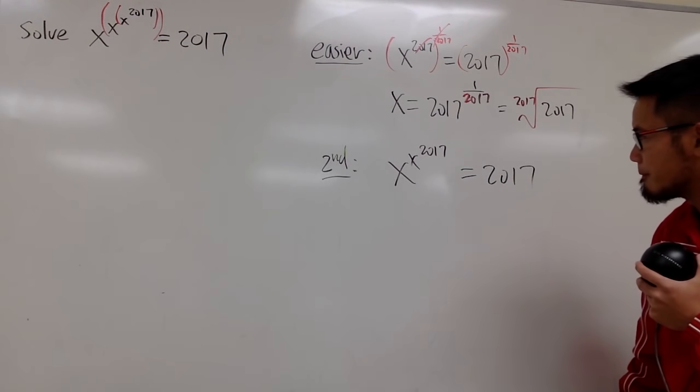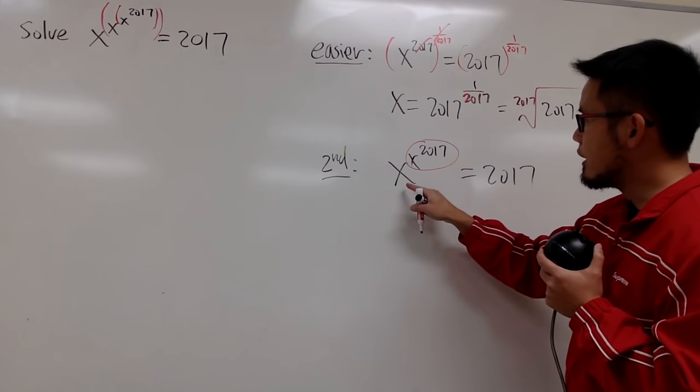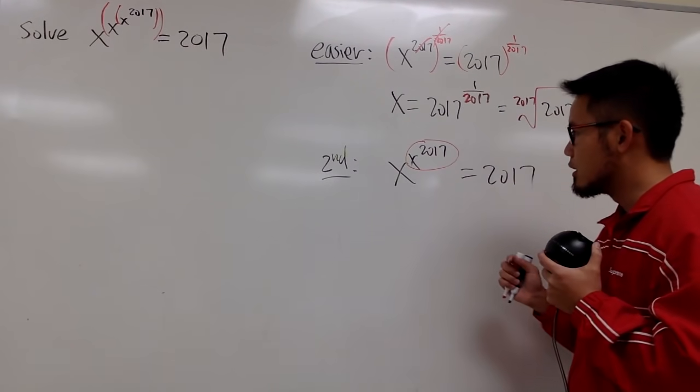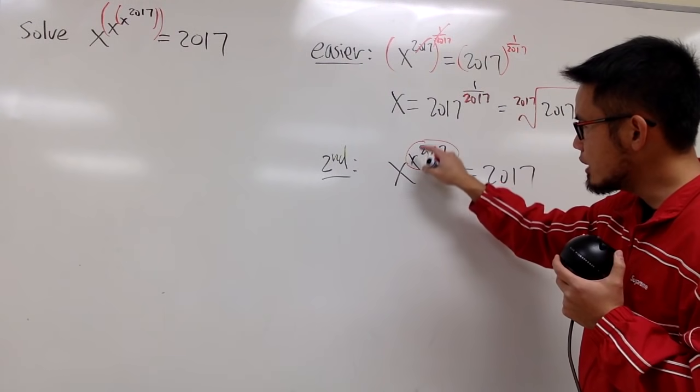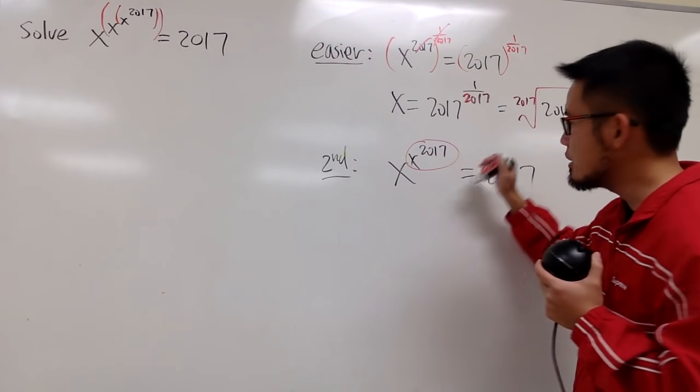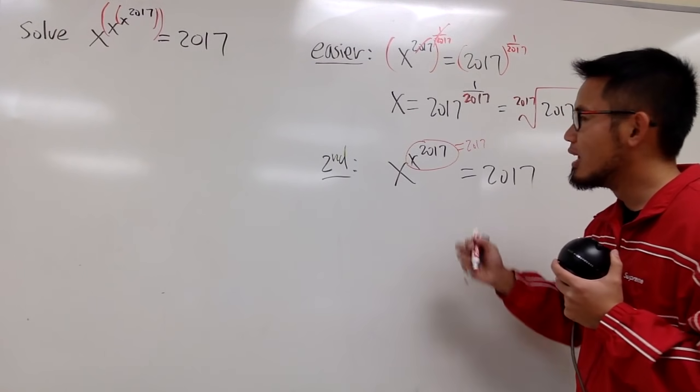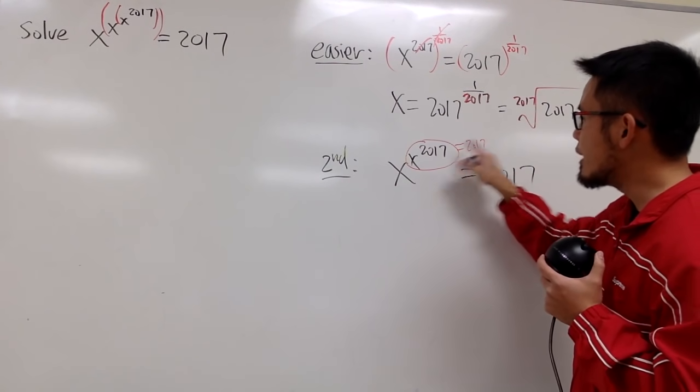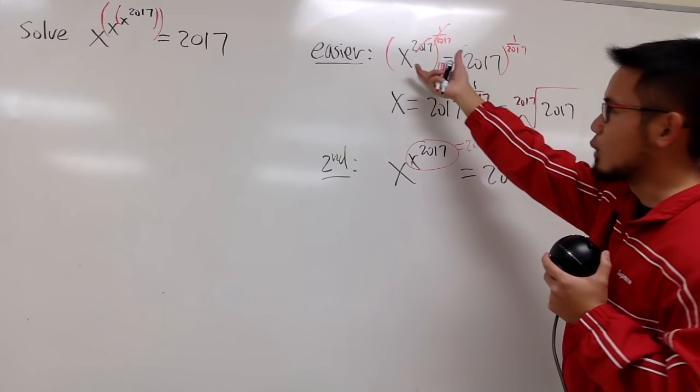If you look at this now, if you pay attention to this power, once again, when you have x to the x to the 2017, you really have to work this out first. And the idea here is that, wouldn't it be nice if this happens to be equal to 2017? Why? Because if this is 2017, then you're talking about x to this red 2017, that's equal to 2017. That's exactly what we just did.